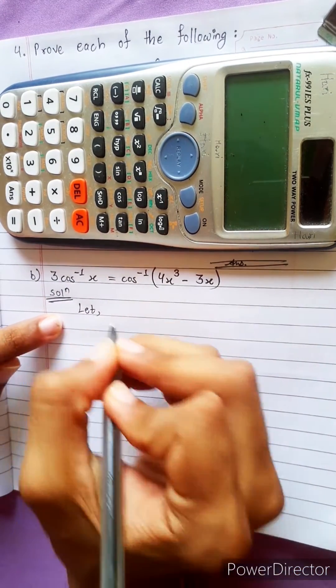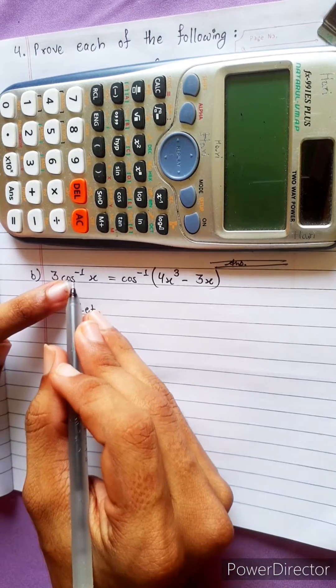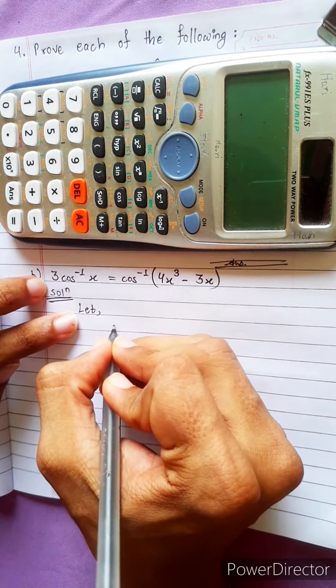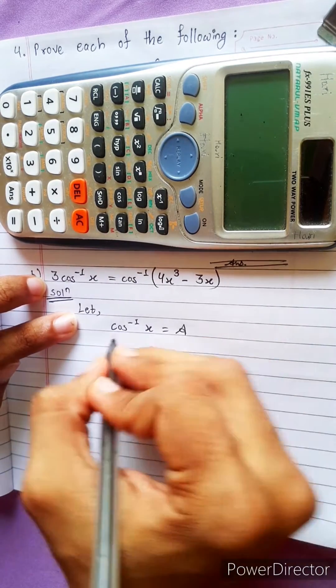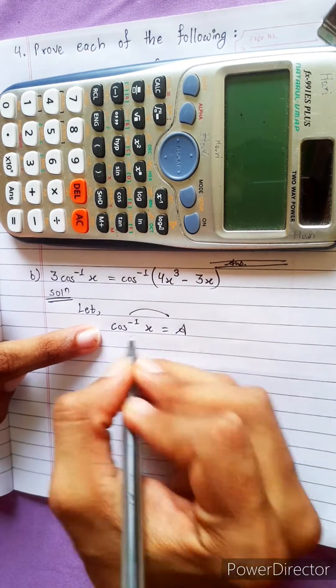Let cos inverse x equals to some variable A. And cos inverse goes this side, then it will become cos A.